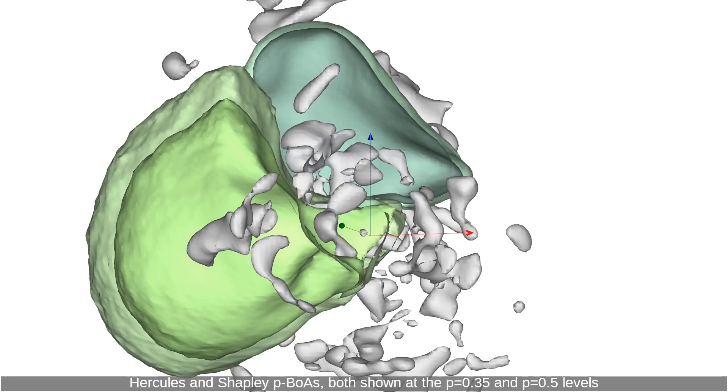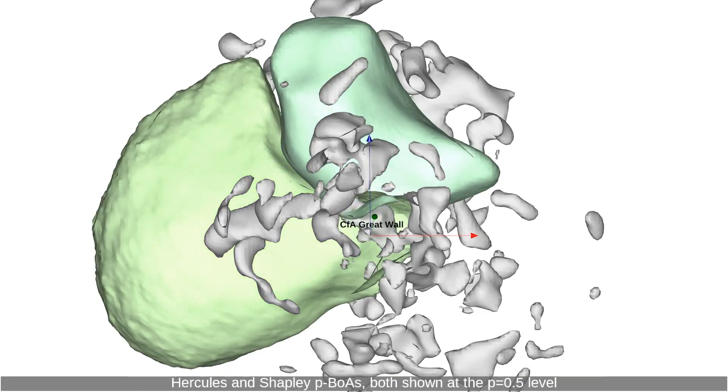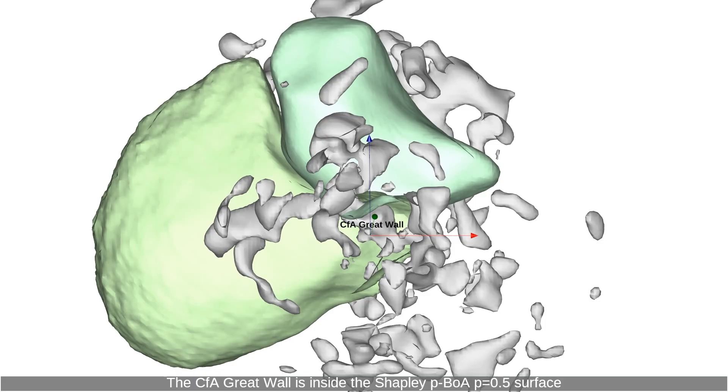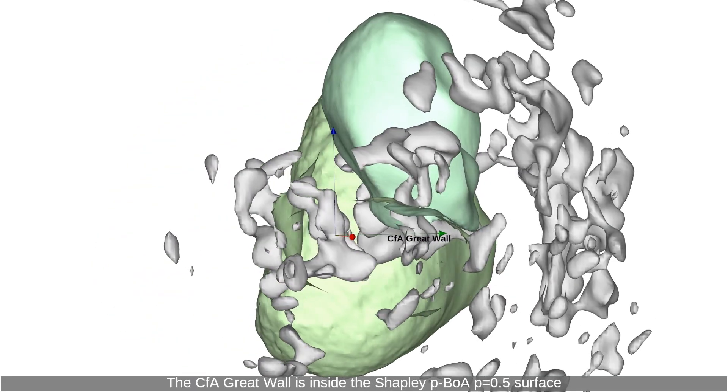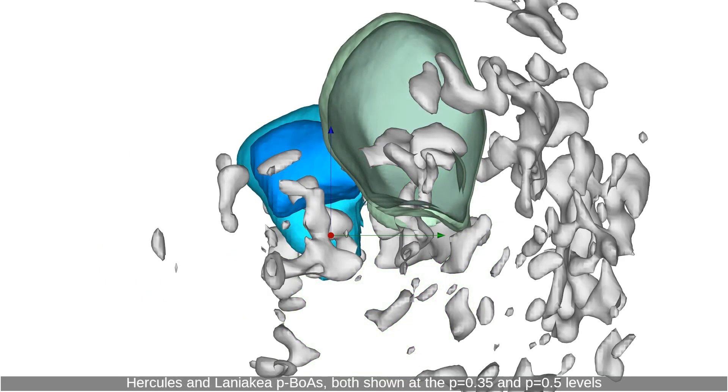Hercules and Shapley PBOAs both shown at the P equals 0.35 and P equals 0.5 levels. The CFA Great Wall is inside the Shapley PBOA P equals 0.5 surface.